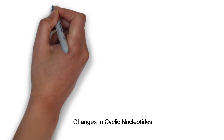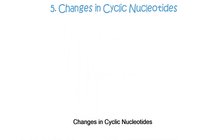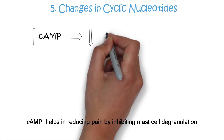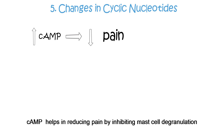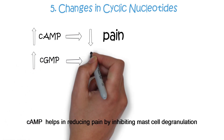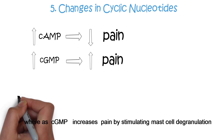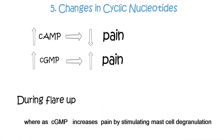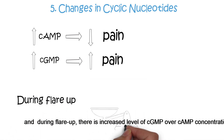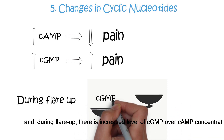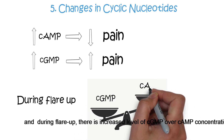The other theoretical factor is changes in cyclic nucleotides. cAMP helps in reducing pain by inhibiting mast cell degranulation, whereas cGMP encourages pain by stimulating mast cell degranulation. During flare-up, there is an increased level of cGMP over cAMP concentrations.